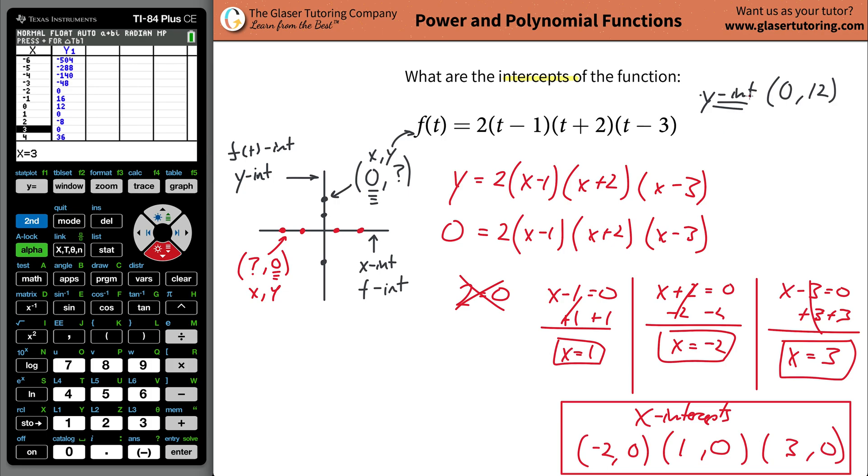Now for the final test, we also said the y-intercept, meaning when x is 0, y should be 12. Is that going to be the case? Well, let's go up to x is 0. Oh my goodness, x is 0, y is 12. Would you look at that?